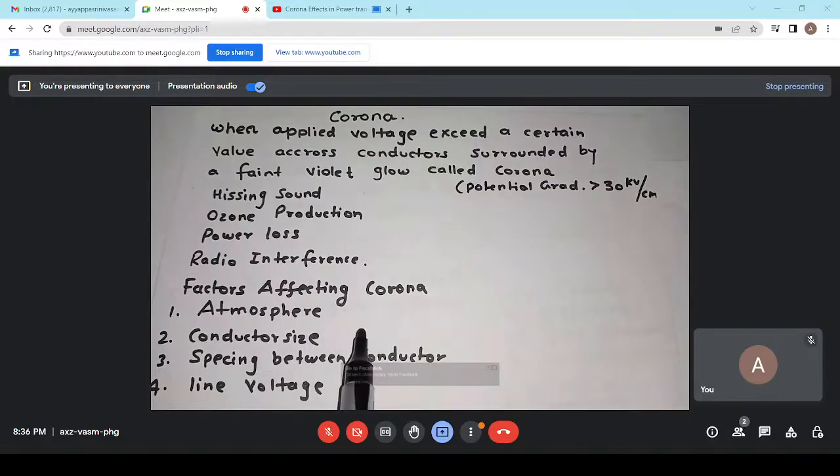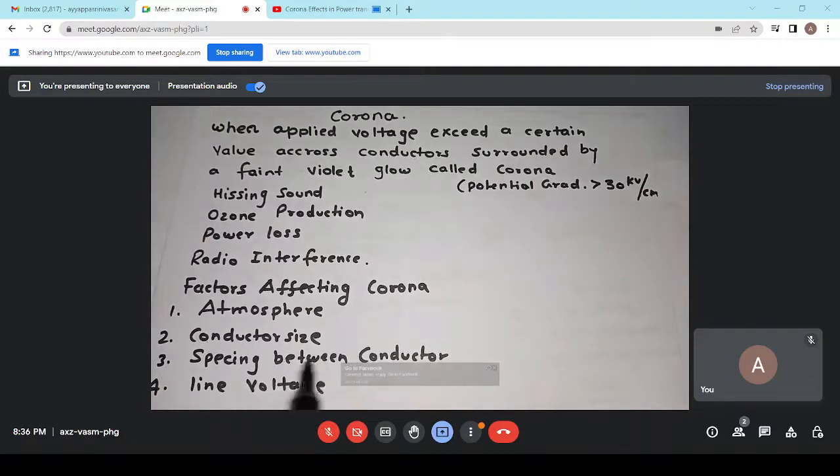Next is conductor size. If the solid conductor, corona will be less. If rough and irregular shape, the conductor size is standard, the corona loss is more. So, this is all about conductor size. Now, next we will see the spacing between the conductors. If spacing between the conductor is large as compared to the diameter, corona will be always less.